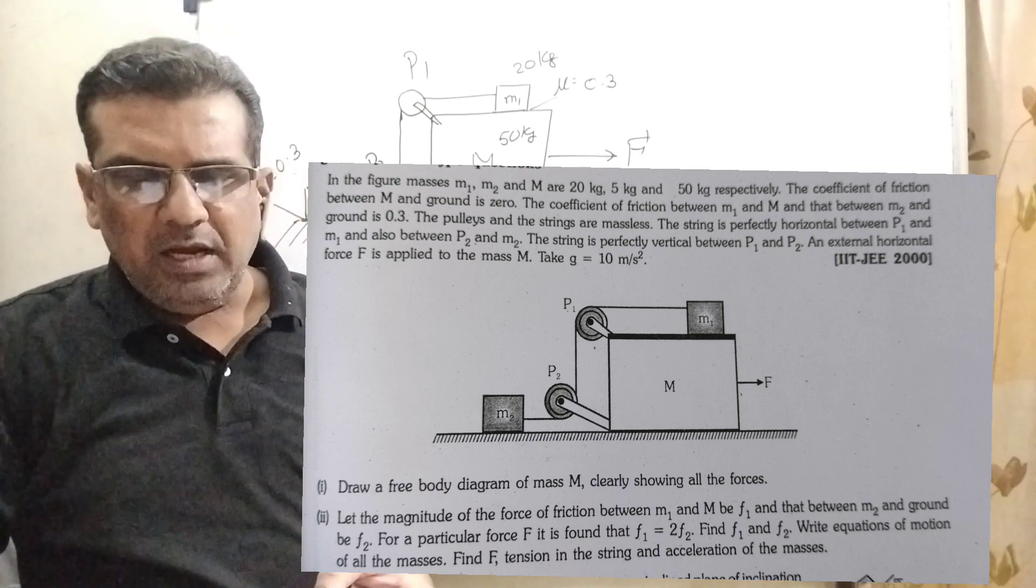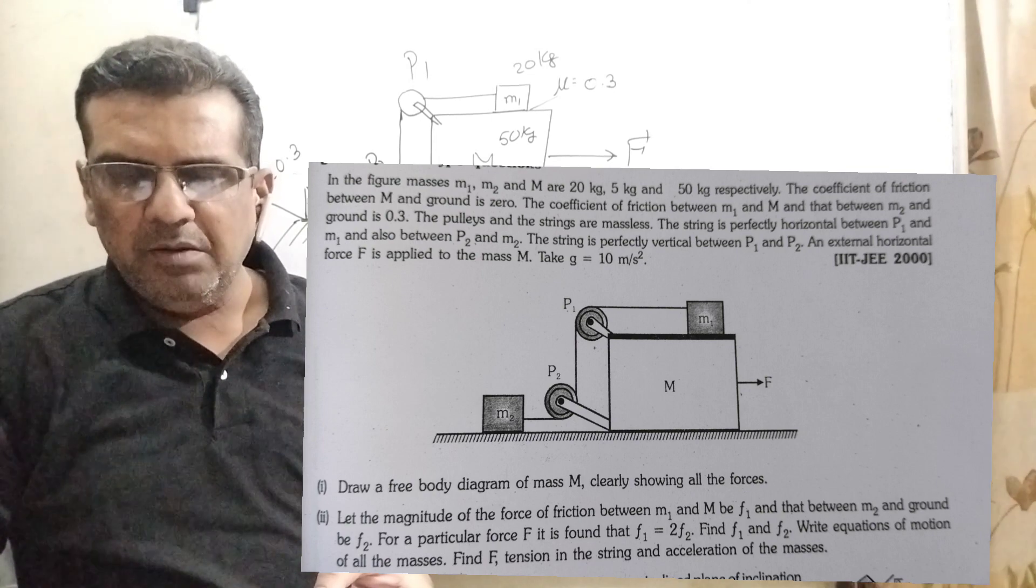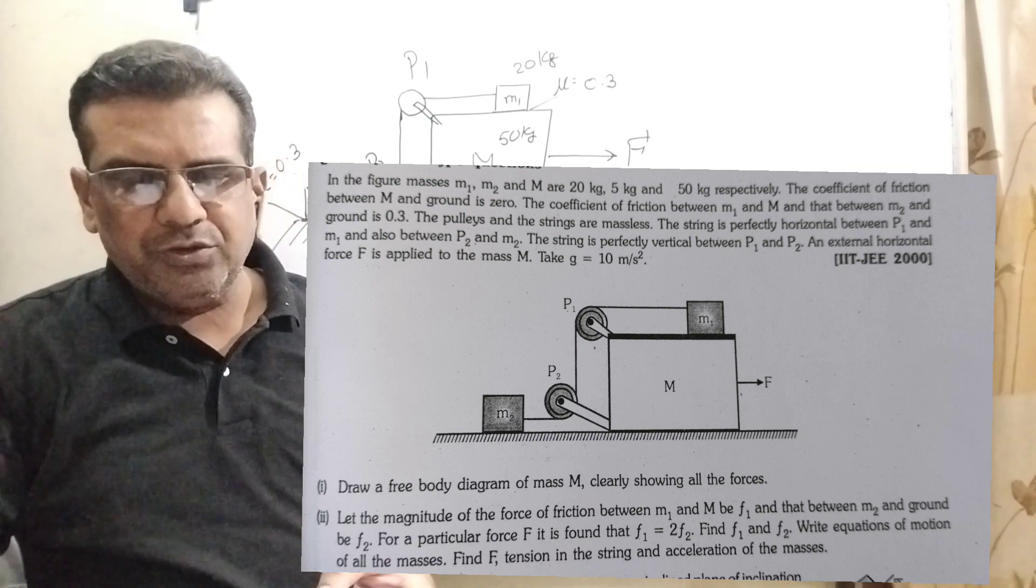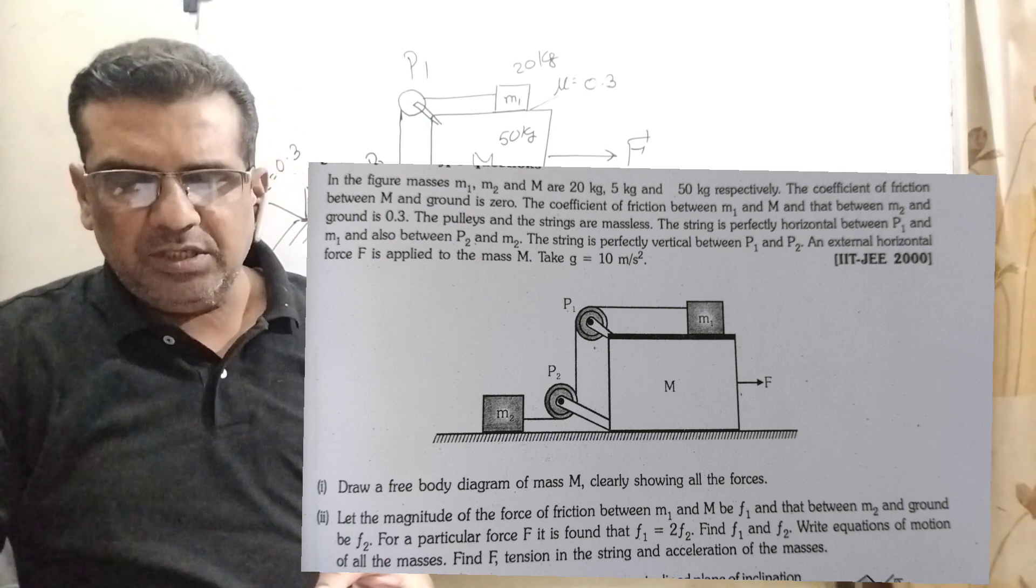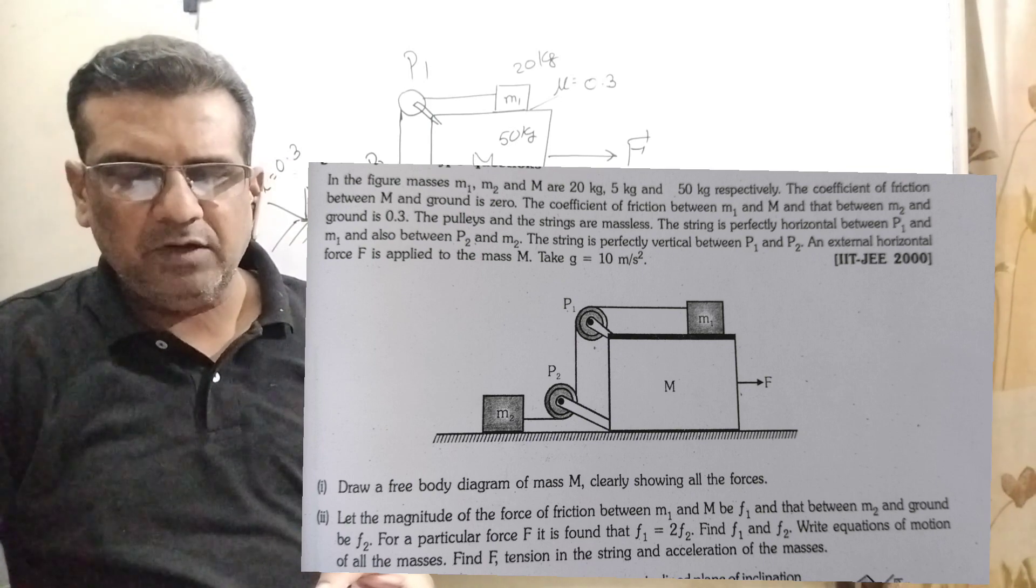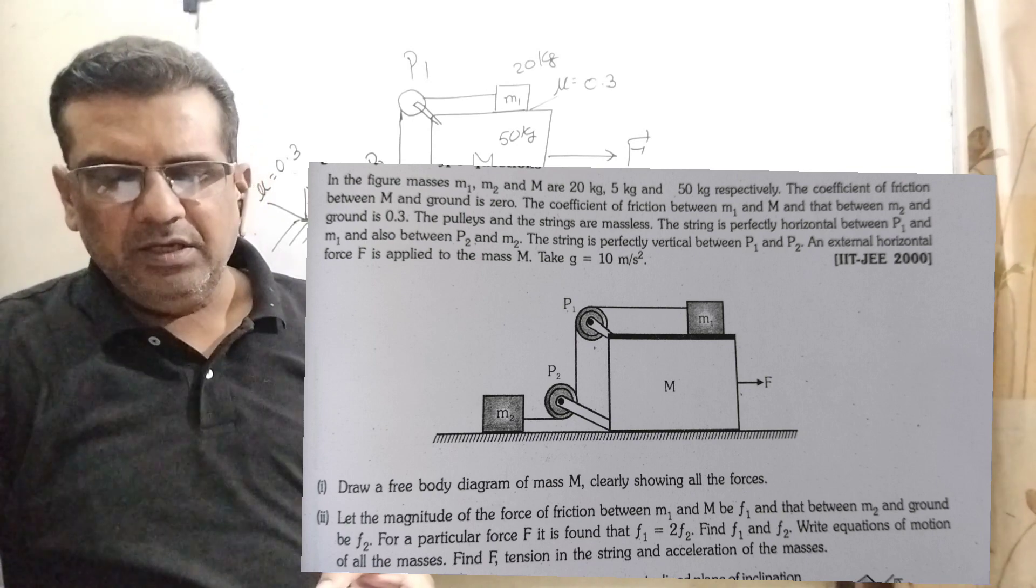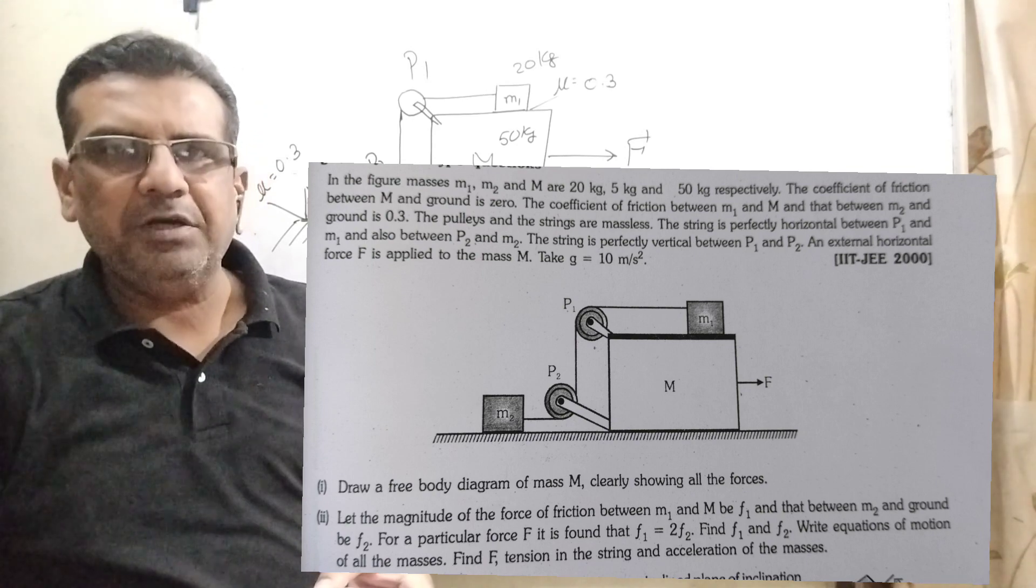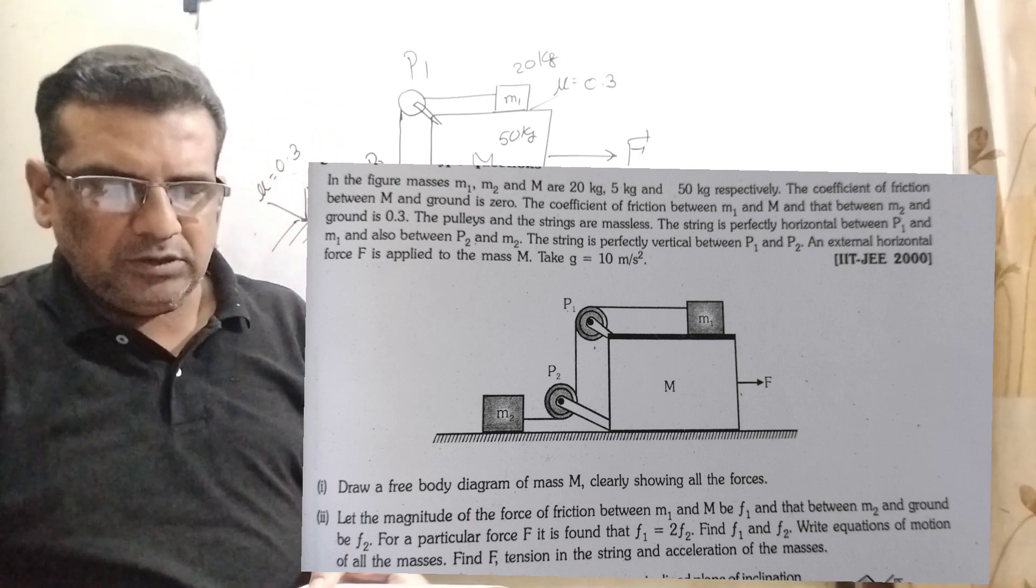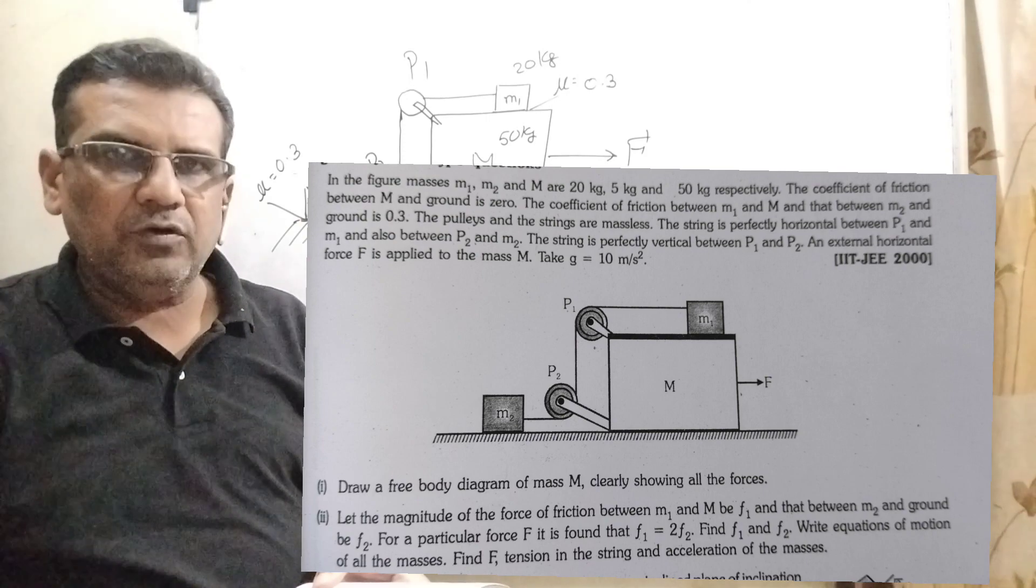The pulleys and the string are massless. The string is perfectly horizontal between P1 and M1 and also P2 and M2. The string is perfectly vertical between P1 and P2 and external horizontal force capital F is applied to the mass capital M. Here take g equal to 10 meter per second square and we have to ask in question, draw the free body diagram of mass capital M, clearly showing all the forces.